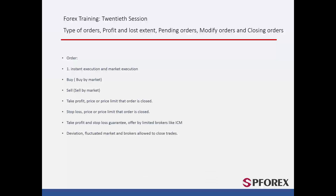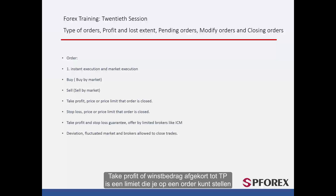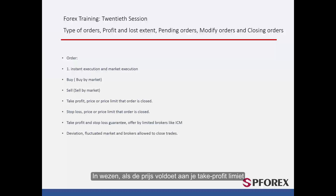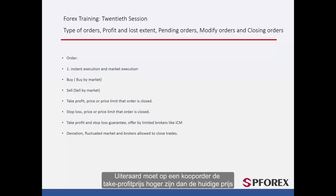Take Profit, abbreviated to TP, is a limit you set on an order which you accept if the market price meets your target price. If price meets your take profit limit, then the order will be closed automatically. On a buy order, take profit price must be more than the current price. On the contrary, in a sell position, a trader must place the take profit price less than the current price.